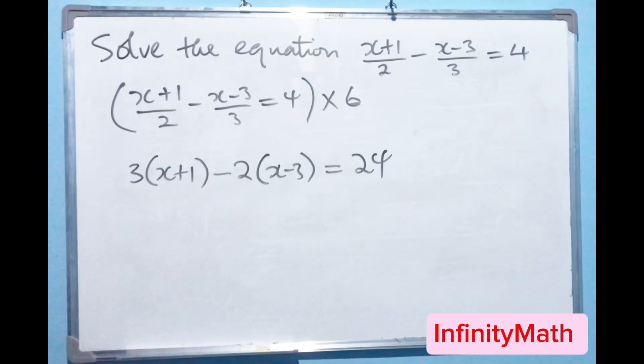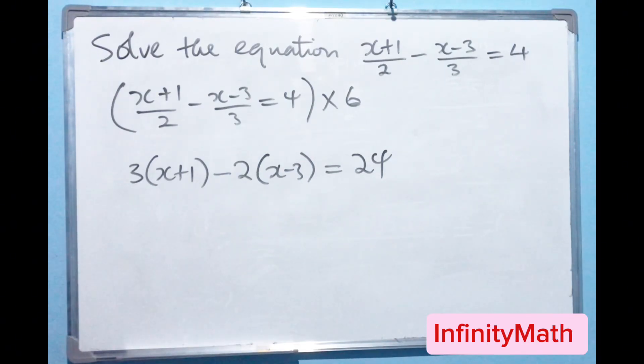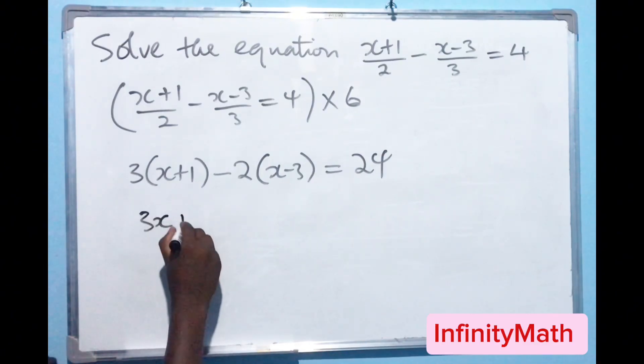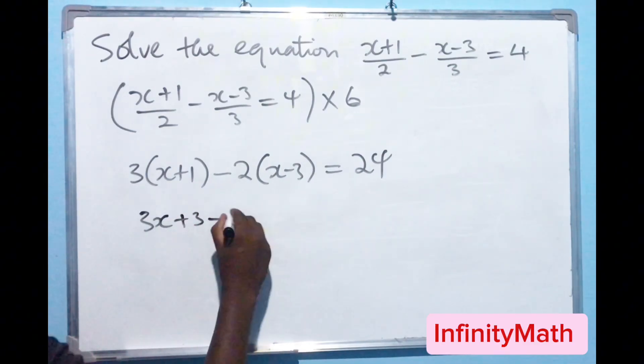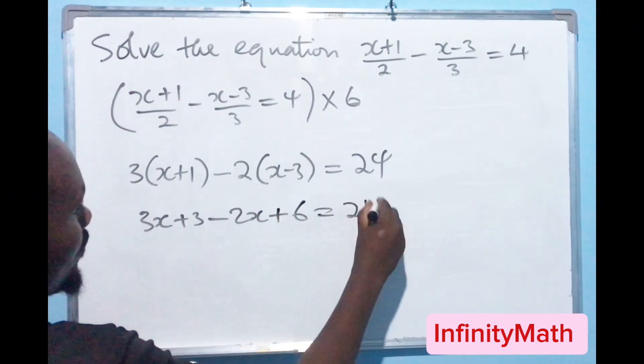And so what we are going to do next now is to simplify this or open the brackets. So I am going to say 3 times x this will give us 3x and that will give us 3, minus that will give us 2x and that will give us plus 6 that should equal to 24.